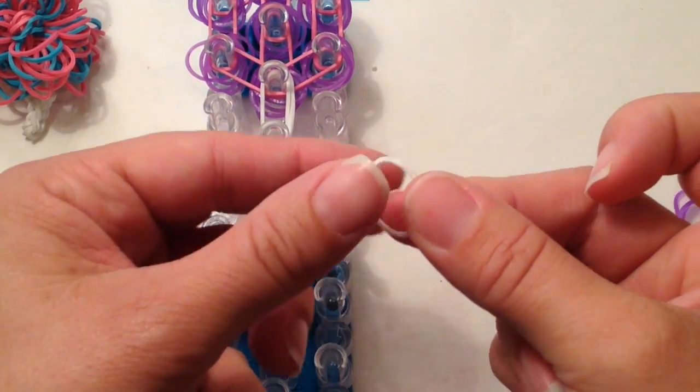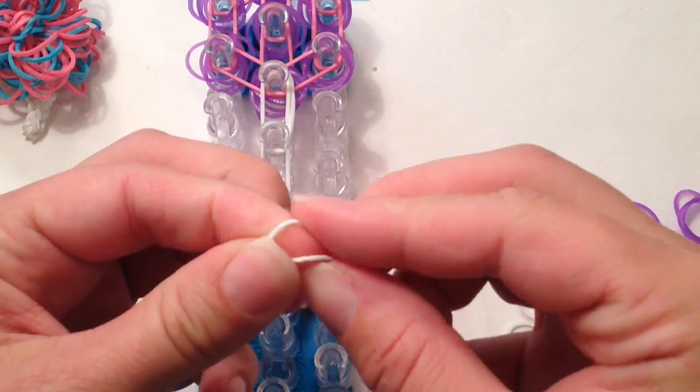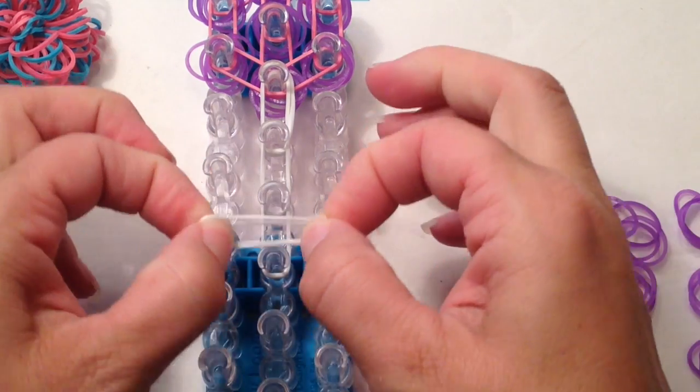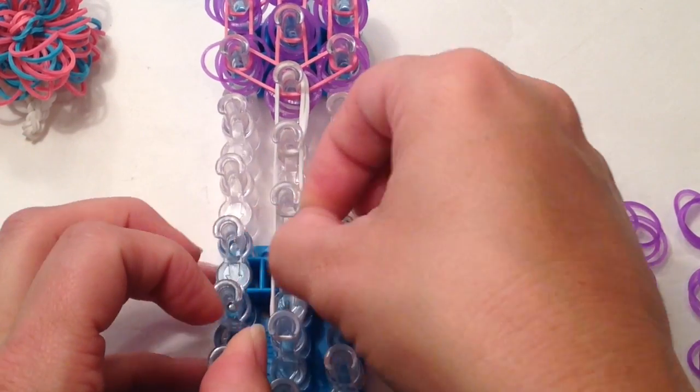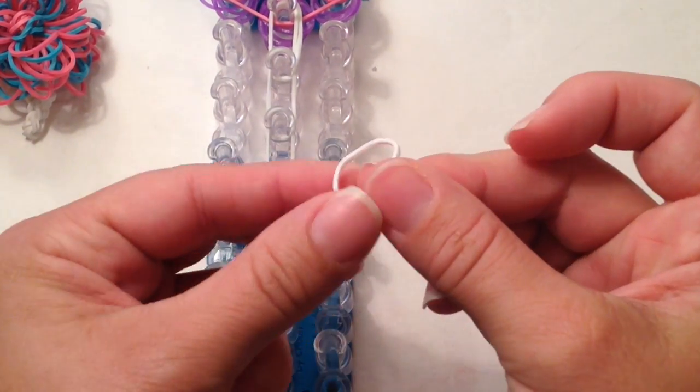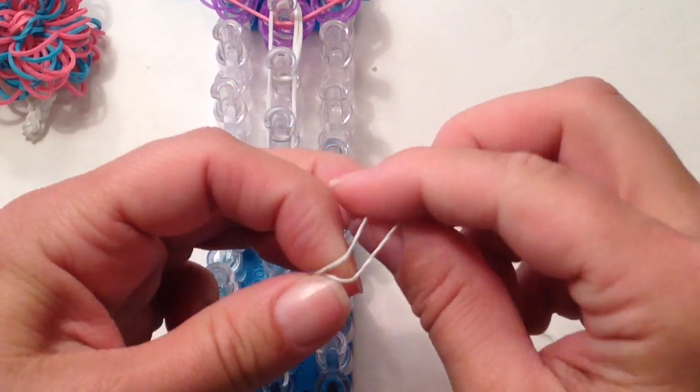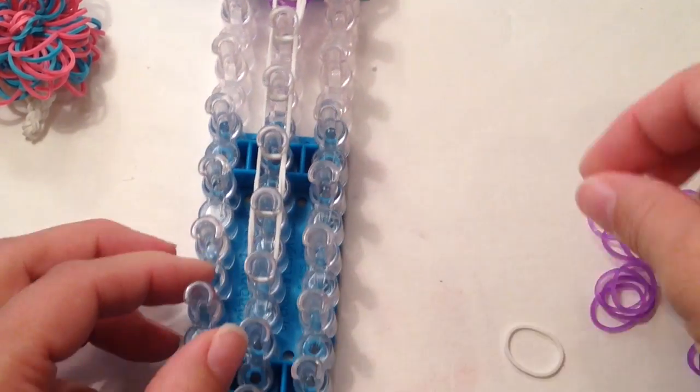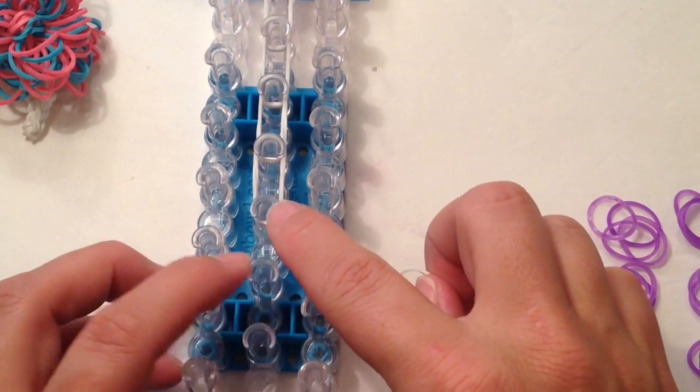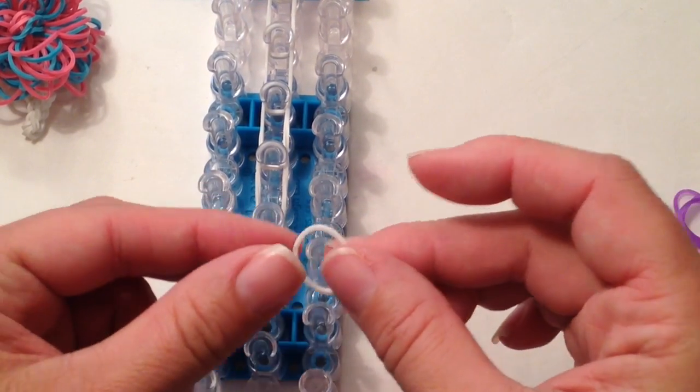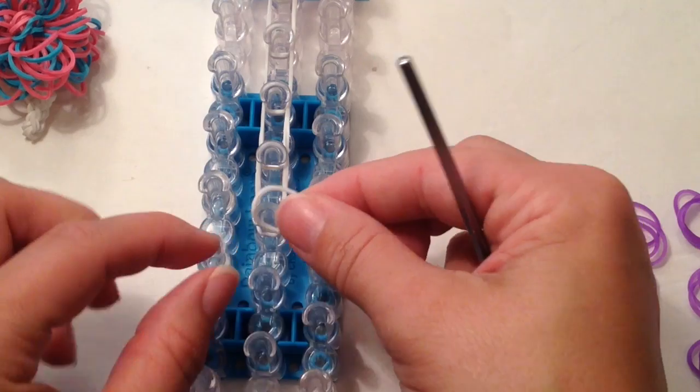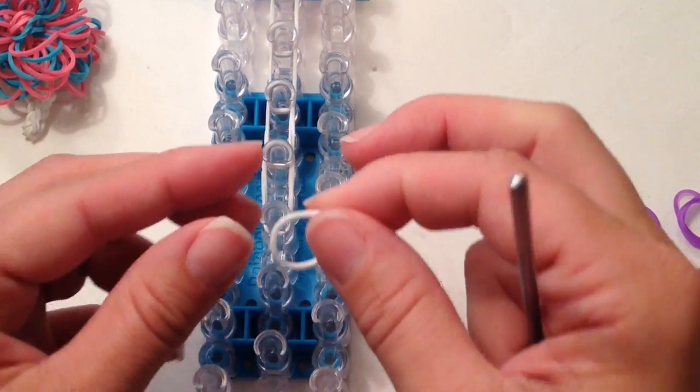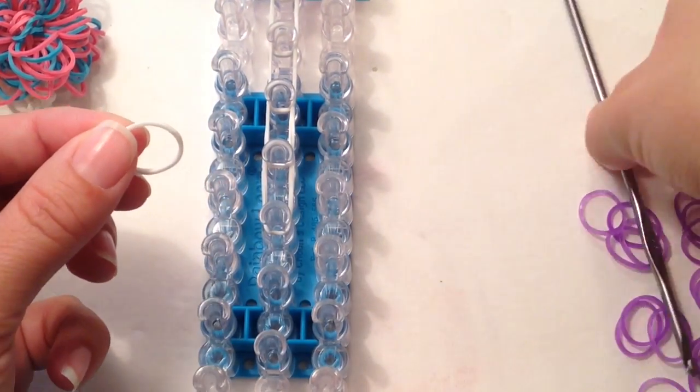A single band that we're going to double twist and stretch out over, coming down the center. Another single band, double twisted, coming down the center. And on the very end, we need to do a 4-time cap band. You can wrap it around your peg 4 times, or you can use your hook for this process.